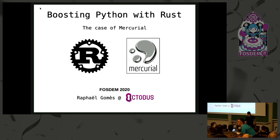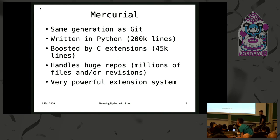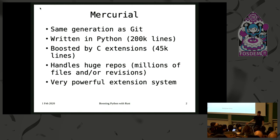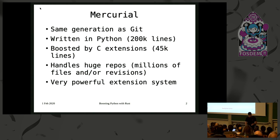For those of you who don't know, Mercurial is a version control system in the same generation as Git. It was made in the same month of April 2005. It's written mostly in Python and has C extensions for performance reasons. It handles huge repositories for companies like Facebook and Mozilla, with millions of files and revisions. It has a very powerful extension system that is super interesting, but I have no time to talk about it today.